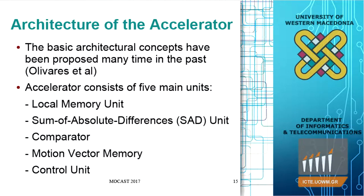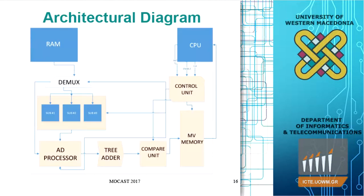The architecture of our accelerator consists of five main units: a local memory unit, the sum of absolute differences unit — which is the kernel part of our architecture — a comparator, a motion vector memory, and a control unit. The ARM dual core CPUs control the accelerator using registers in the control unit. There is a demultiplexer that accepts input from the off-chip RAM of the board and writes it into proper arrays in the local memory.